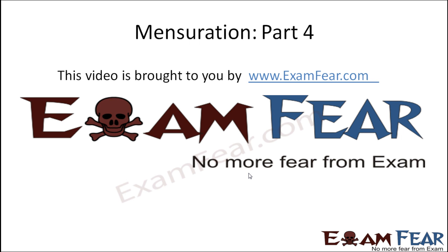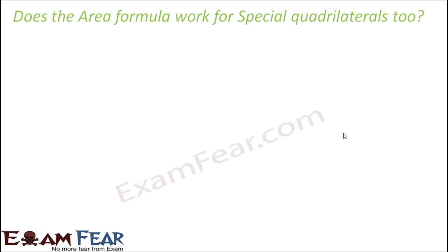This video on mensuration part 4 is brought to you by examfear.com. The question is: does this area formula work for special quadrilaterals too? By now we have already learned about many special quadrilaterals like square, rectangles, parallelogram and so on. We have deduced different area formulas for each of them. Now we see that the general area formula — half into diagonal into sum of the heights on the diagonal — should work for any quadrilateral.